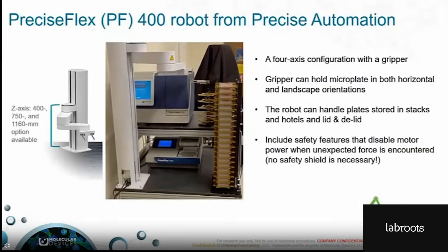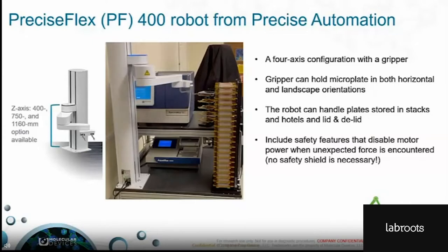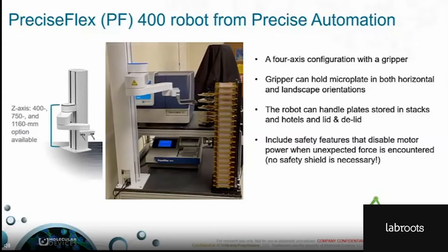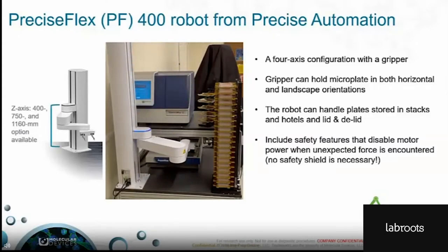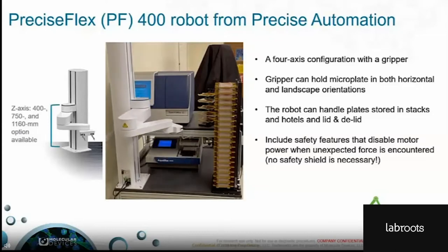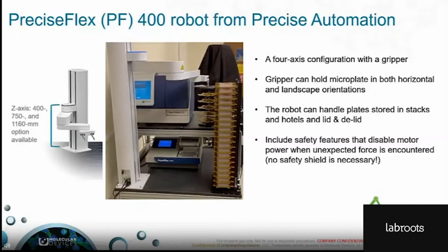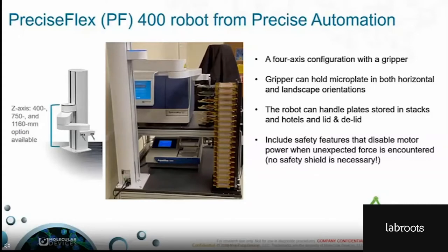The PF400 robotic arm is a four-axis sample handler with a microplate gripper, ideal for automation applications where ease of use, space requirements, and safety are critical. These robots are available in three different height configurations and can be integrated to a linear rail to service both single and multi-station work cells. The gripper allows the robot to handle a wide variety of microplate sizes without needing to change the gripper tool. The PF400 includes advanced safety features that disable motor power when unexpected force is encountered, allowing operation without safety shields in benchtop applications.